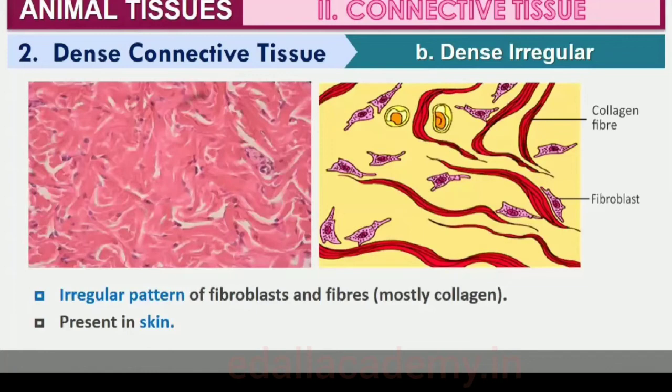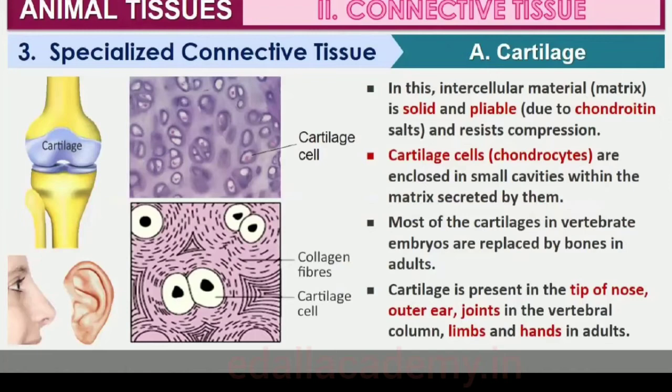Cartilage, bones and blood are various types of specialized connective tissues. The intercellular material of cartilage is solid and pliable and resists compression. Cells of this tissue, chondrocytes, are enclosed in small cavities within the matrix secreted by them. Most of the cartilages in vertebrate embryos are replaced by bones in adults. Cartilage is present in the tip of nose, outer ear joints, between adjacent bones of the vertebral column, limbs and hands in adults.